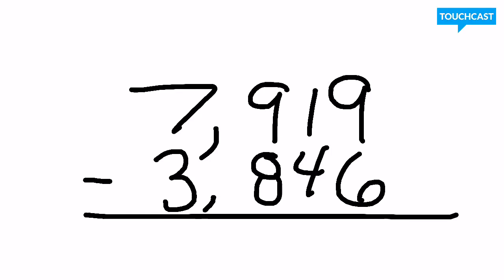Now when we do this, the first thing we're going to want to do is go into the ones place, and that is right here. In our ones place we're going to start our subtraction. Well, nine minus six as we know with our math facts will give you a difference of three.